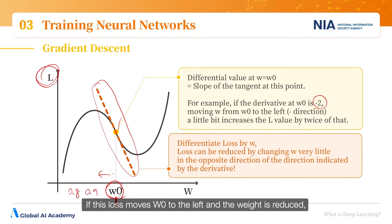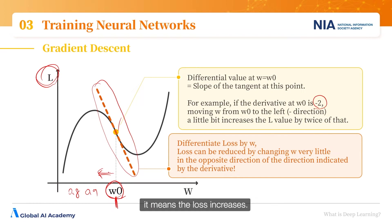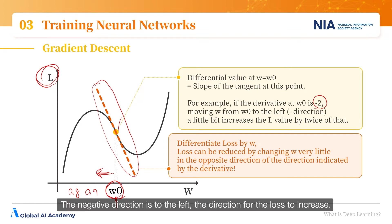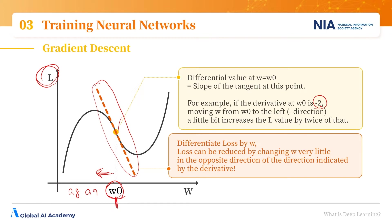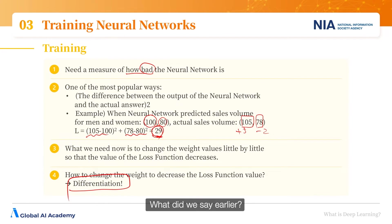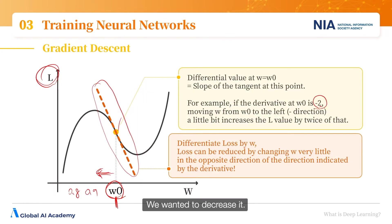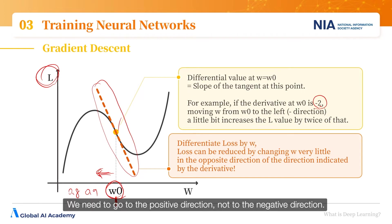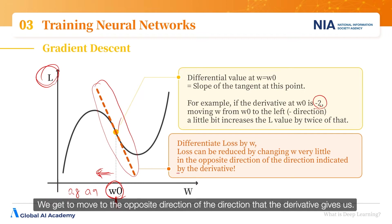If this loss moves w0 to the left and the weight is reduced, it means the loss increases. The negative direction is to the left — the direction for the loss to increase. A value of minus 2 means if the weight is adjusted by 1, the loss will be doubled. We wanted to decrease the loss from 29 to 0, so we need to go in the positive direction, not the negative direction. We need to move in the opposite direction of what the derivative gives us.